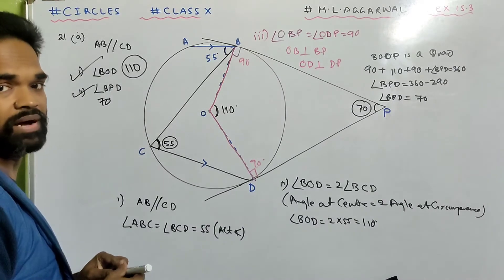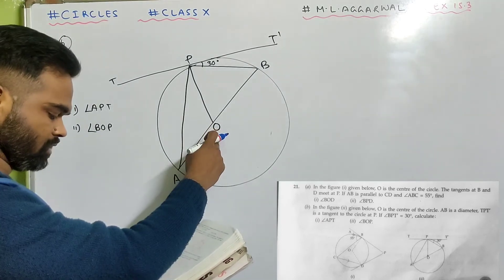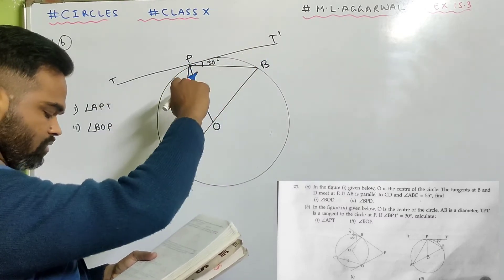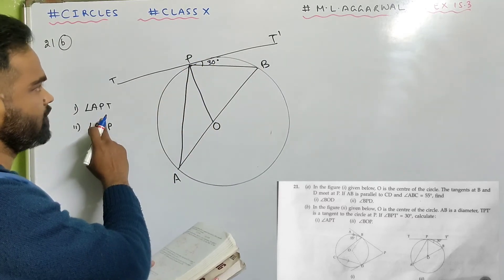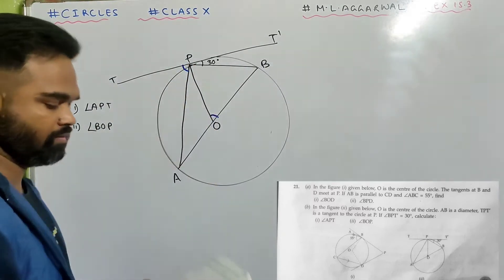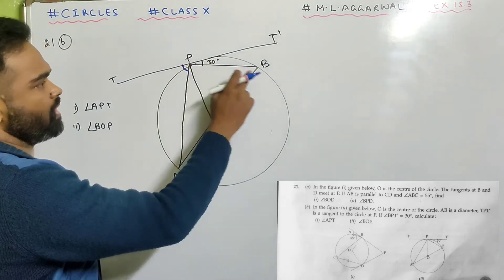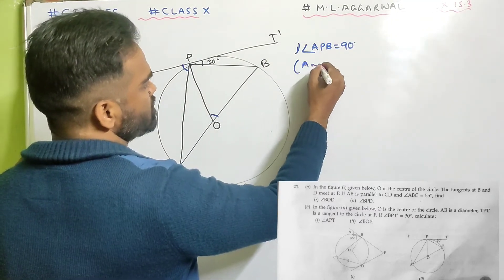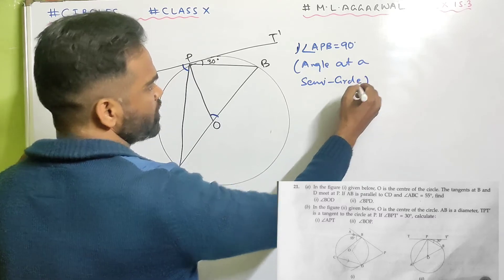Now look at sum 21 part B. In the figure given, O is the center of the circle and AB is the diameter. TPT dash is the tangent to the circle at P. If angle BPT dash is 30 degrees, calculate angle APT and angle BOP. Angle APB is 90 degrees — angle at a semicircle. Any angle drawn on the circumference with the diameter is 90 degrees.